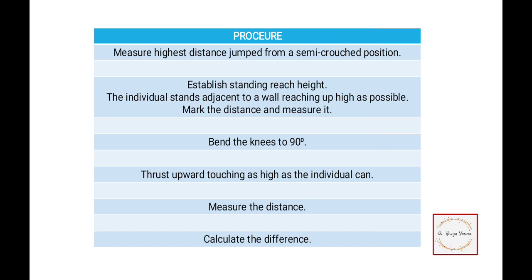In this procedure, the athlete takes a semi-crouched position and jumps vertically. First, establish the standing reaching height. The individual stands adjacent to a wall, reaching up as high as possible. Mark the distance and measure it.